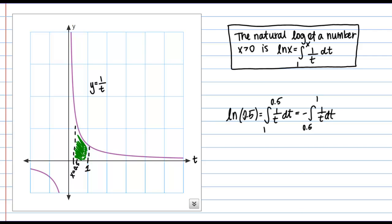So this implies that the natural log of 0.5 is negative. And that's going to be true for any x value between 0 and 1.